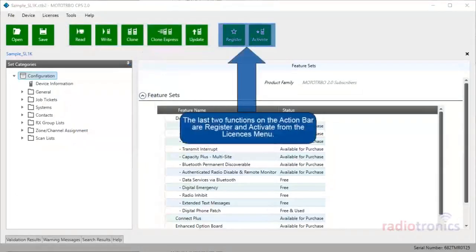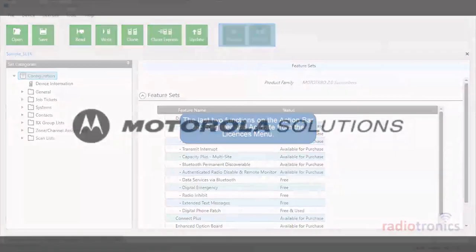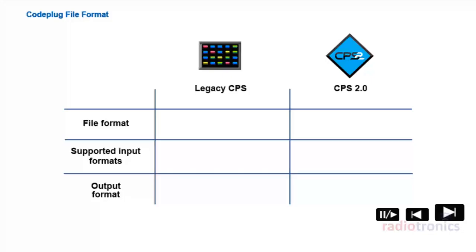The last two functions on the action bar are Register and Activate from the Licenses menu. CPS 2.0 has a new CodePlug file format, .ctb2, as compared to the legacy CPS 1 format, .ctb. While the new file format is incompatible with the old software, the old file format can be opened and edited both with a legacy CPS and CPS 2.0.